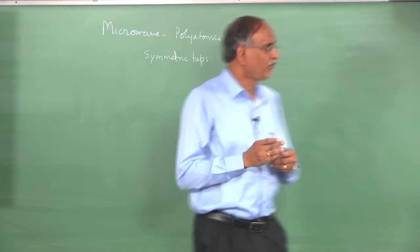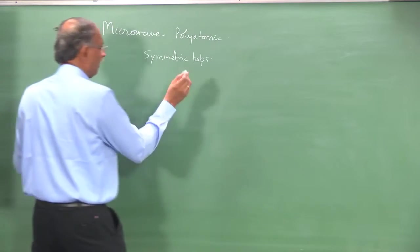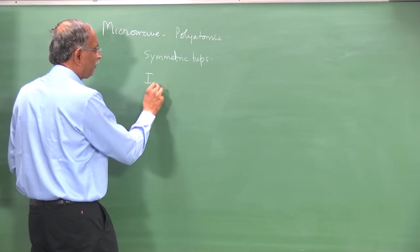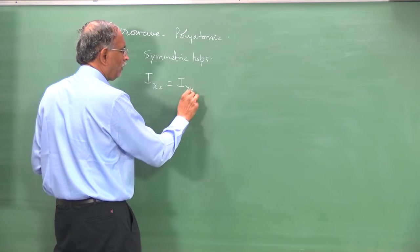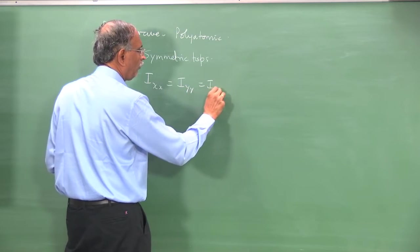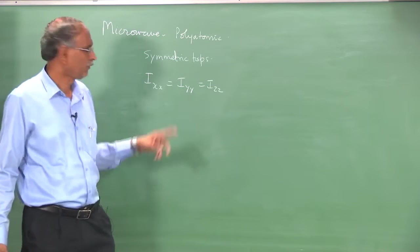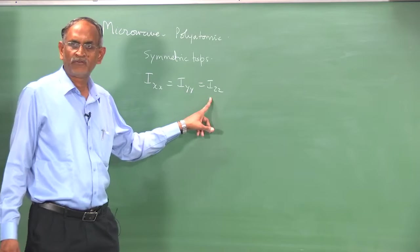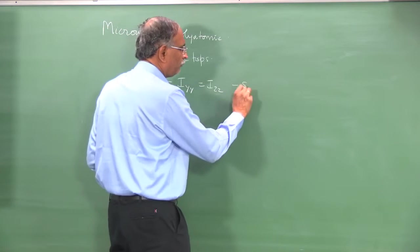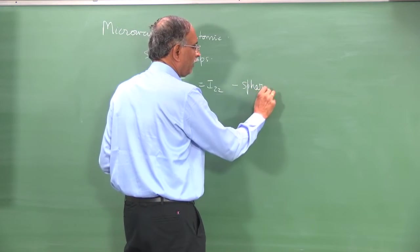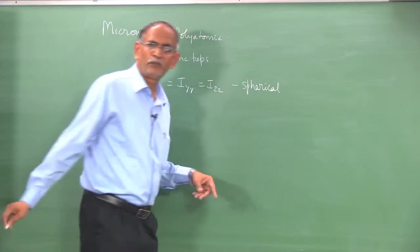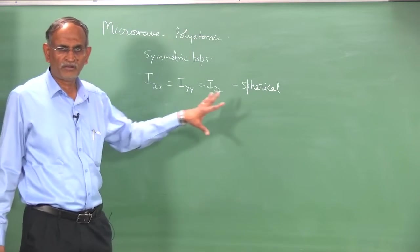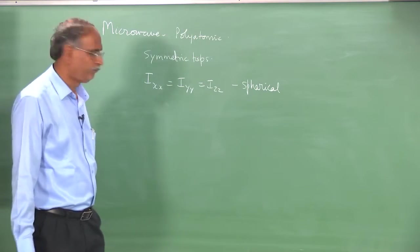the special case when the principal moments of inertia are equal in all directions I_xx = I_yy = I_zz is called a spherical top. Some examples were given: cubic molecules and perfectly tetrahedral molecules are the best examples for spherical top.